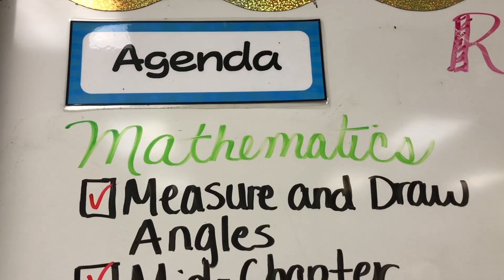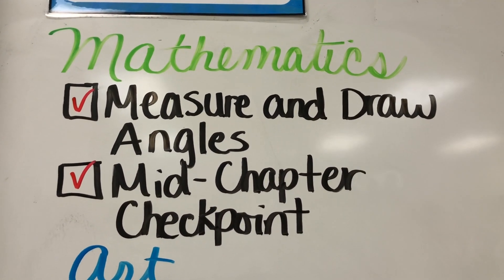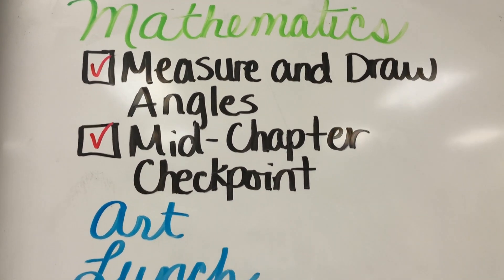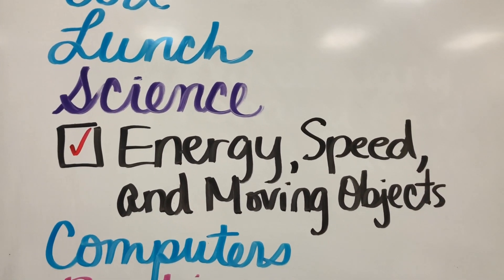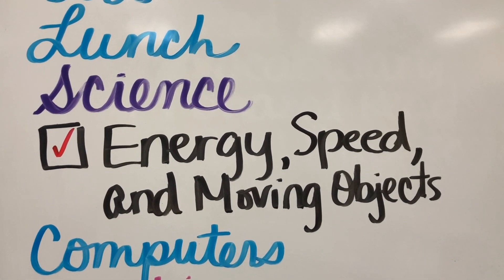It's now Thursday and I'm coming to you at the end of the day with the highlights. In math, we were practicing measuring and drawing angles, and then students took their mid-chapter checkpoint. In science, we did something really cool with energy, speed, and moving objects. The first thing I did was set up a whole set of dominoes because we had a literacy connection with dominoes. I wanted students to see how energy is transferred — the dominoes standing up were potential energy, and once I gave one a little push with my finger, it created a chain reaction where the potential energy turned into kinetic energy transferred through the whole domino chain.